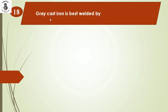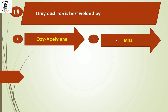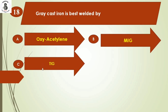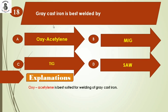Gray cast iron is best welded by: Option A: oxyacetylene. Option B: MIG welding. Option C: TIG. Option D: SAW, or submerged arc welding. For gray cast iron, oxyacetylene is the best suited welding process. So the right answer is option A. Note that TIG is best suited for aluminum.